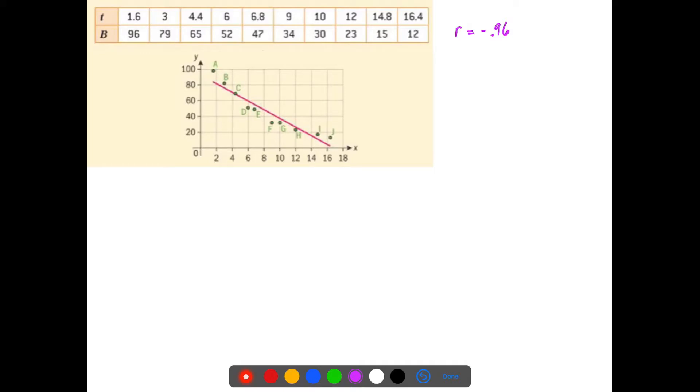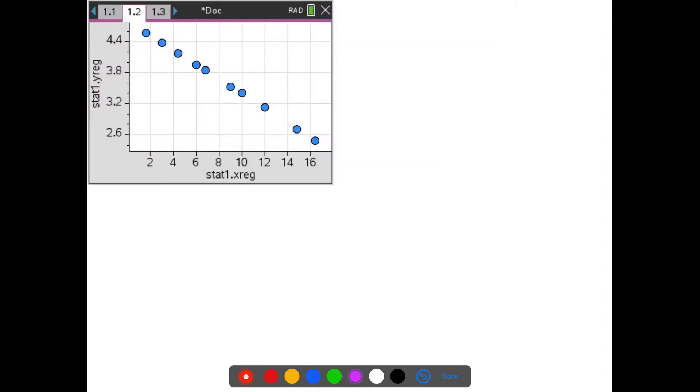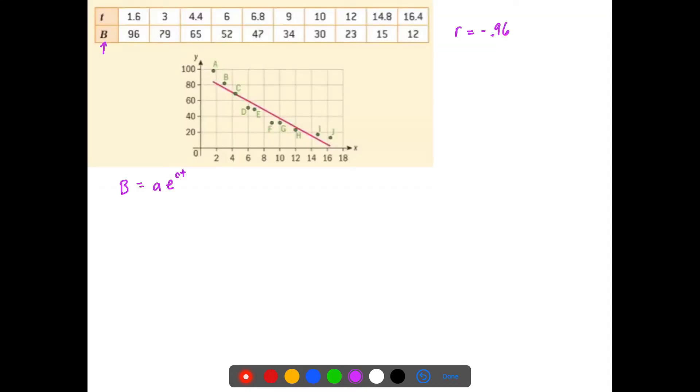So if it's exponential, then the Y value, the B, I believe that stands for bacteria, would equal some constant times E to the CT power. And those parameters, the A and the C, are constants that we could solve for. And we could hopefully be able to find whether this would actually be an exponential function. Now I want to show you something real quick.